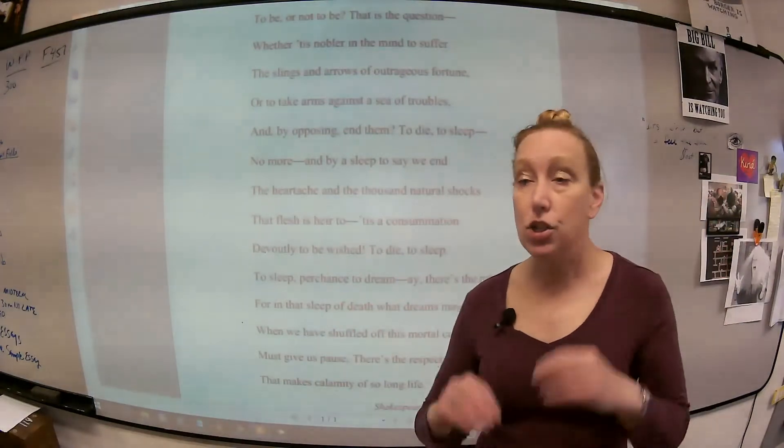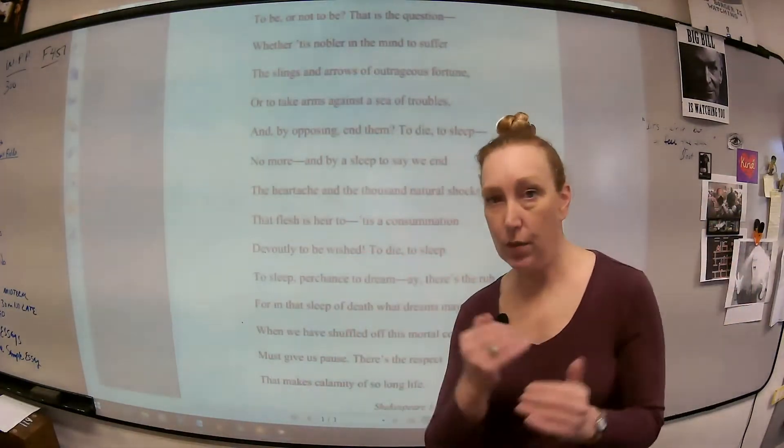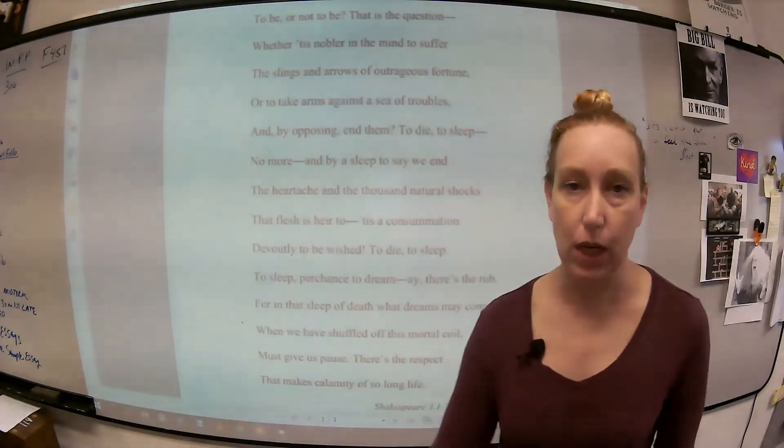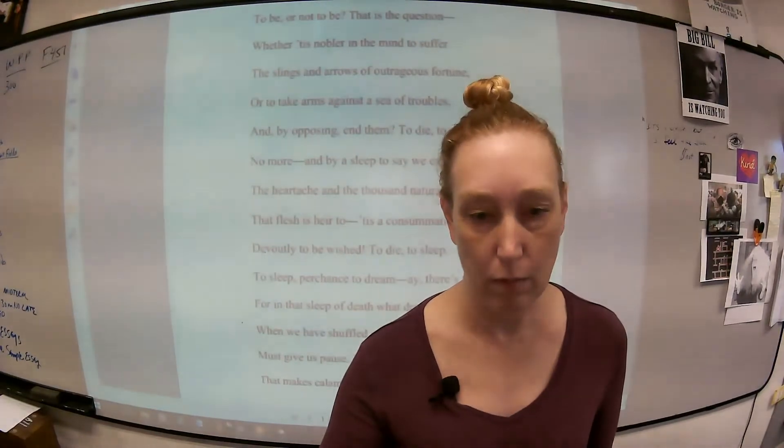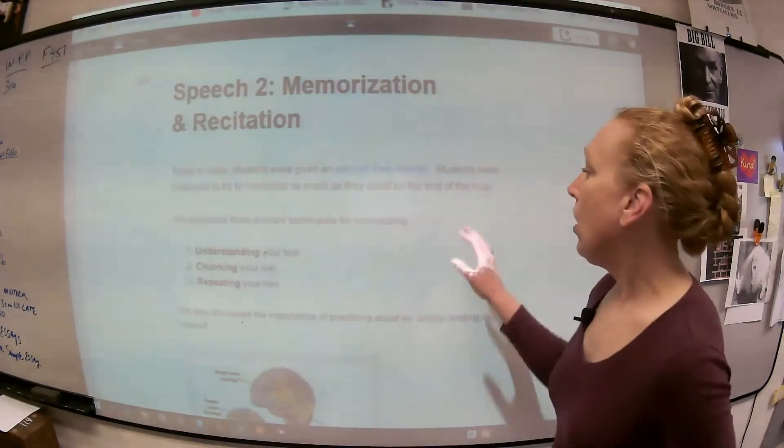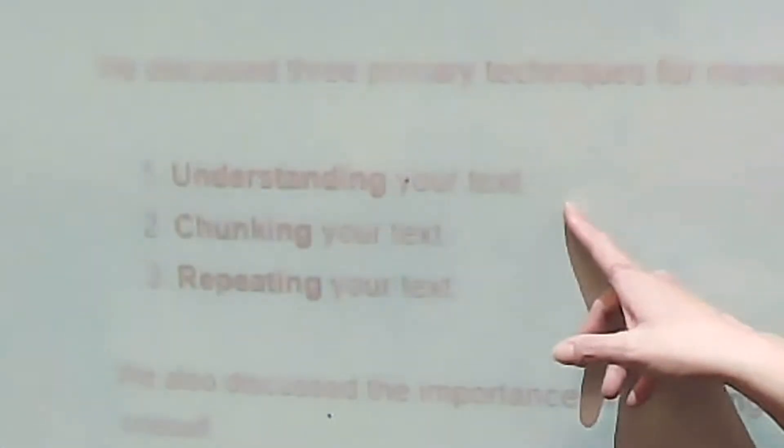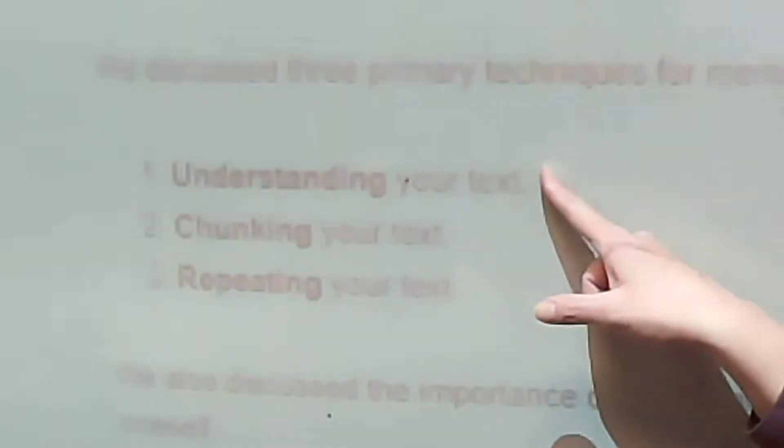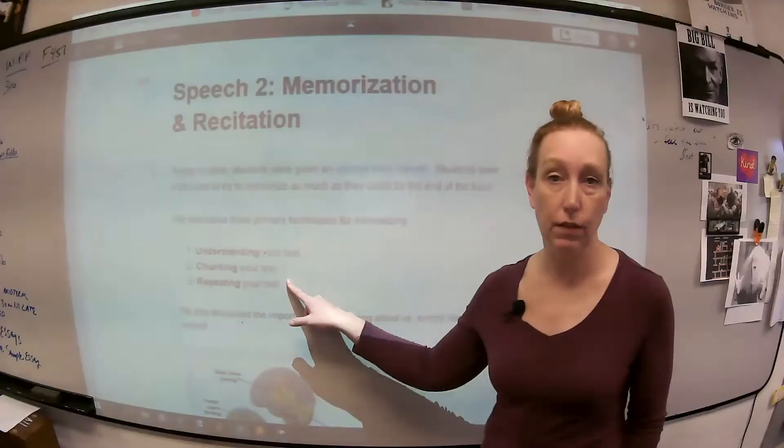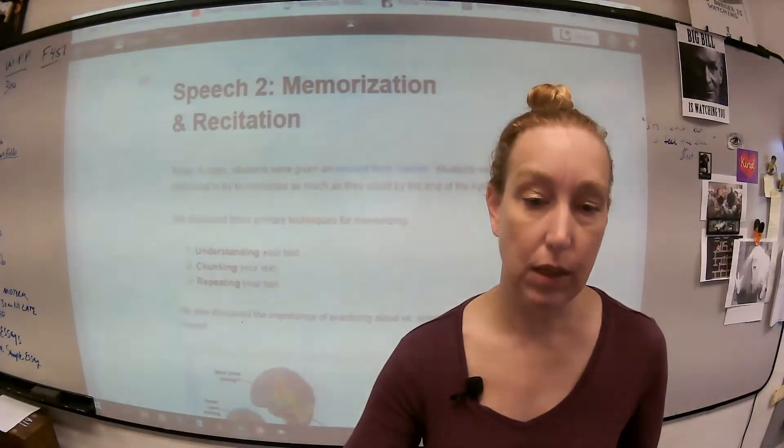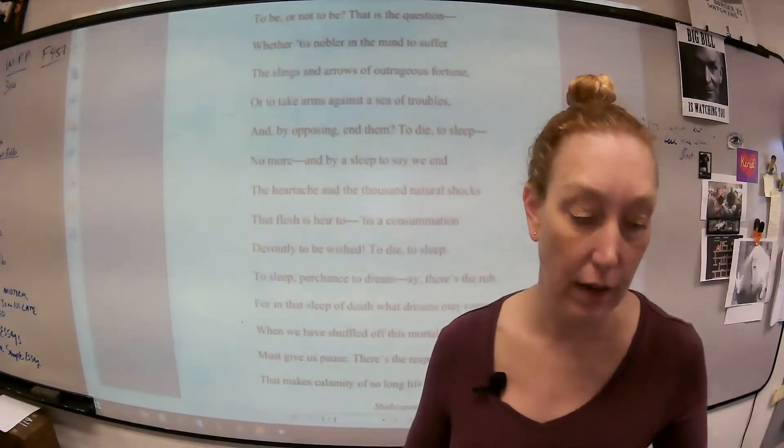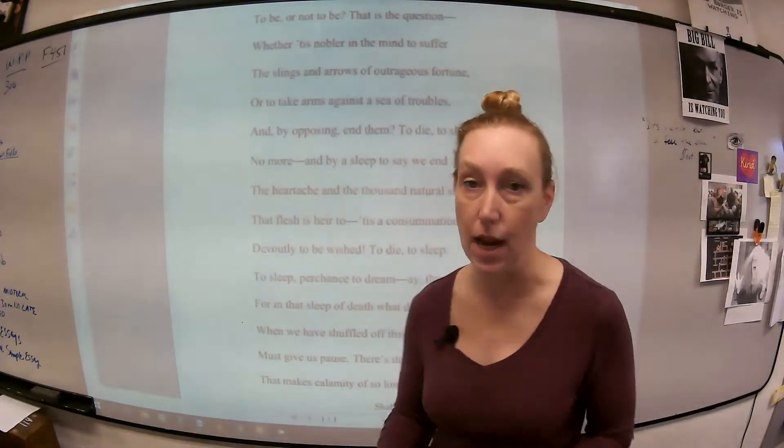All right, a bunch of words in English. You know English, but you don't really know what this means. Whenever you're reciting something, we usually do three things. You need to understand your text, you need to chunk your text, and then you've got to repeat your text over and over again. So what does it mean to understand your text? Let's go through and figure out what it is that Hamlet is trying to say.